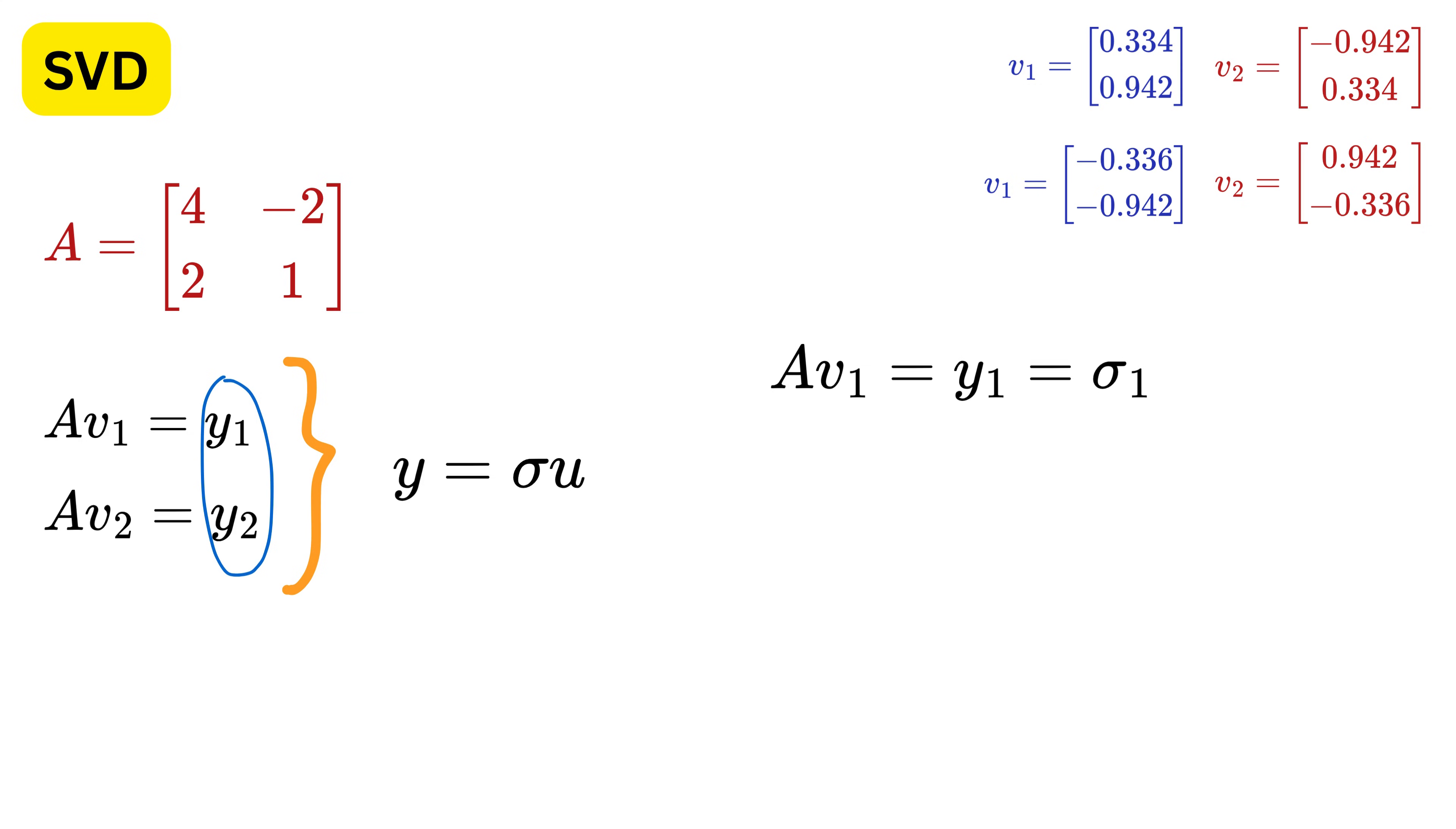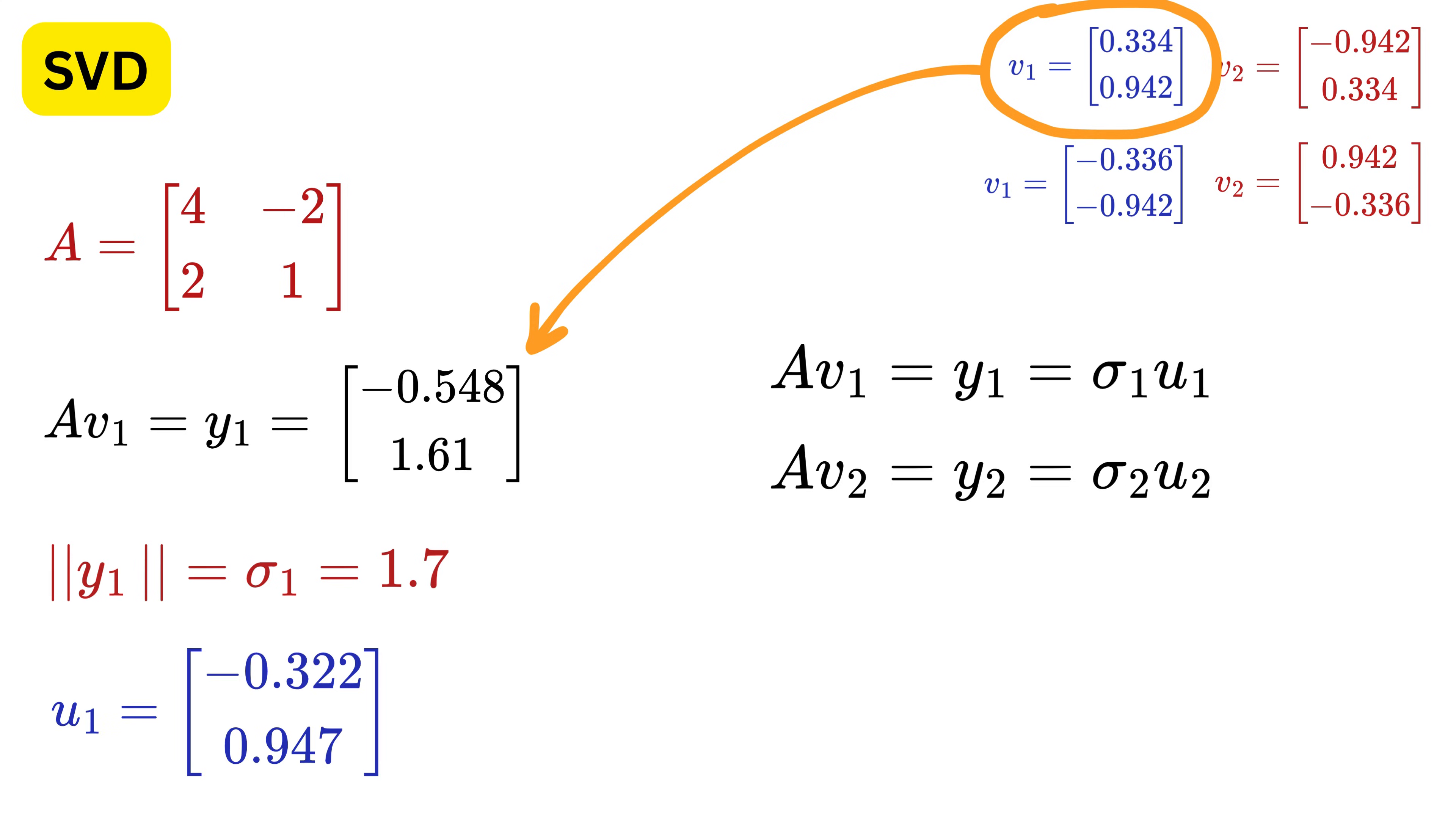So, Y1 equals sigma 1 times U1, and Y2 equals sigma 2 times U2. For example, for this Y1, its magnitude is this, and thus we get the unit vector U1 as this. And this will be sigma 2, and U2 for this Y2.